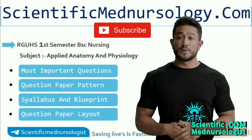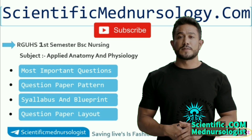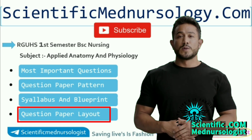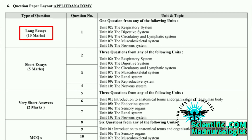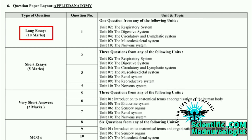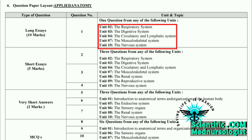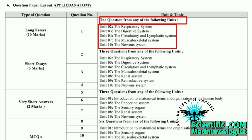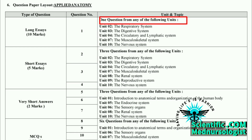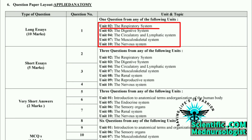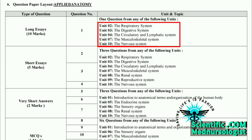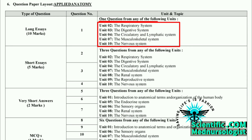Before discussing the important questions of Applied Anatomy, let's discuss the question paper layout. The first part is the long essay part, which carries 10 marks for each question. It consists of 5 standard questions, out of which only 1 standard question will come for the degree examination. That 1 standard question will contain only 1 ordinary question out of all possible ordinary questions in that particular standard question.